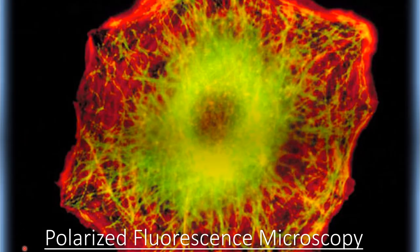This here is an image of the cell viewed under polarized fluorescence microscopy. You can clearly see the cell with the nucleus in the center and various protein fibers scattered throughout the cytoplasm of the cell. These fibrillar proteins make up the cytoskeleton of the cell.